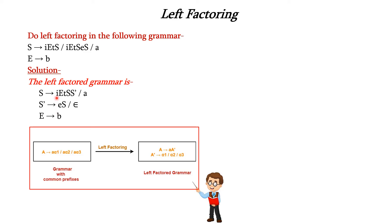S' is used to write the remaining part of the derivation. For the production where nothing remains after the prefix, we write epsilon. For the other production, the remaining part is ES, so S' → epsilon | ES. This is the left factored grammar.